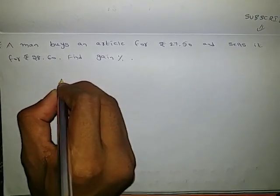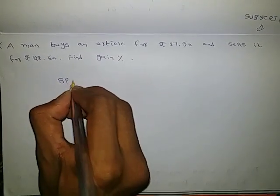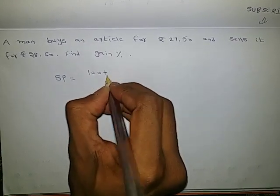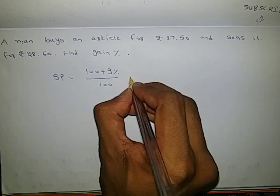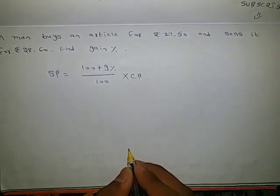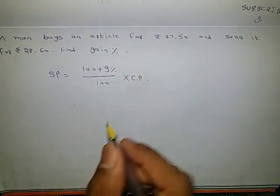We know the formula: selling price equals 100 plus gain percentage divided by 100, into cost price. So let us substitute whatever is given.